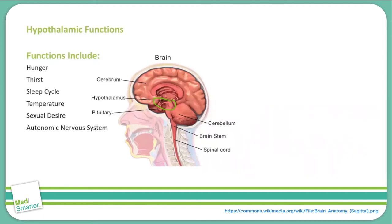You should be familiar with the suite of hormones produced and released by the hypothalamus. Starting with thyrotropin releasing hormone, or TRH, which stimulates the release of TSH — thyroid stimulating hormone — from the pituitary gland. Thyroid stimulating hormone then acts on the thyroid gland to release T3 and T4.